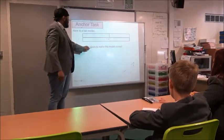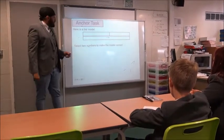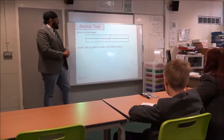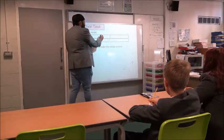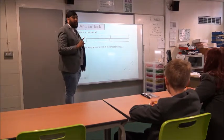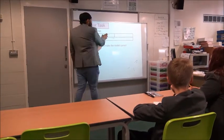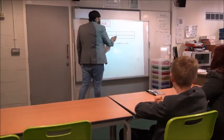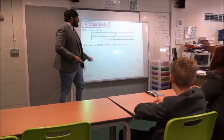Now, we have here. It says, here is a bar model. Select two numbers to make the model correct. So, these two numbers, do they need to be added or taken away or divided or times? Which one is it? Added. Added. So, this number plus this number need to give us 5.24. Now,